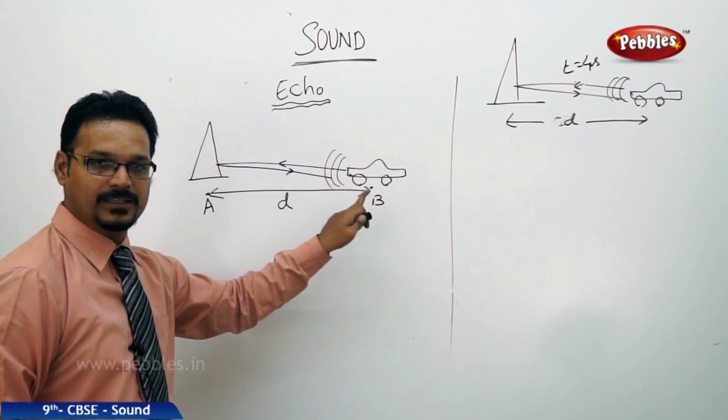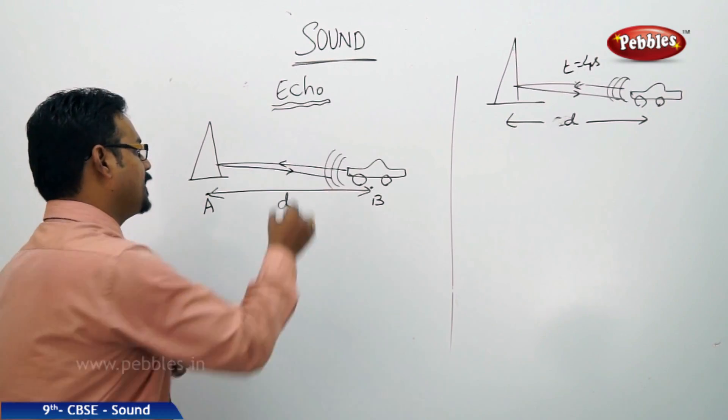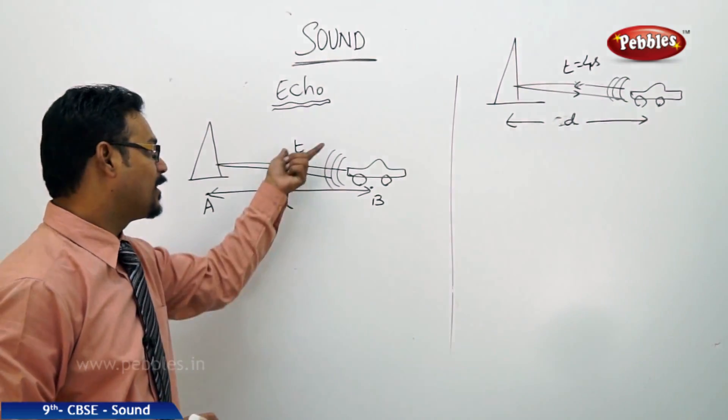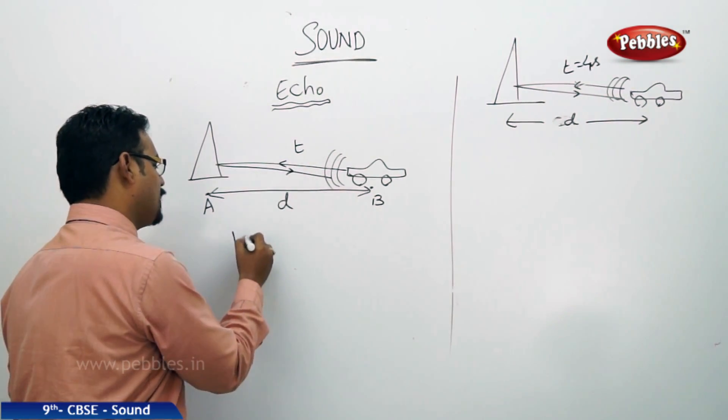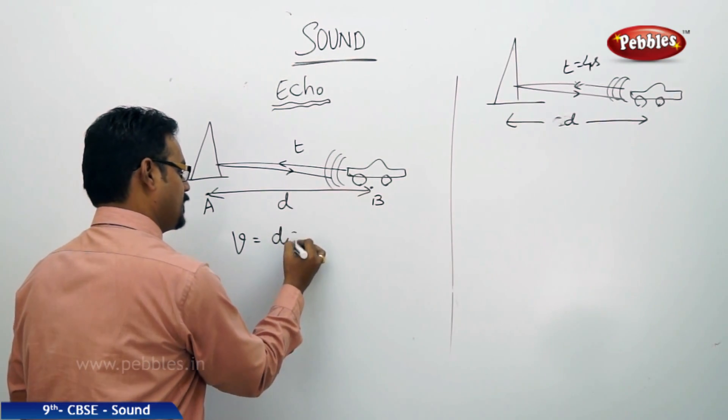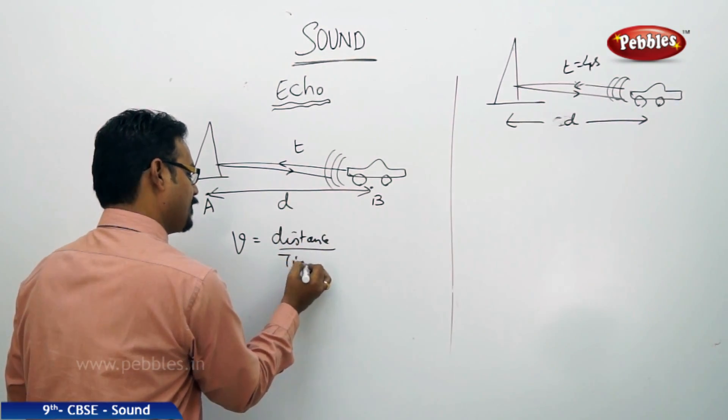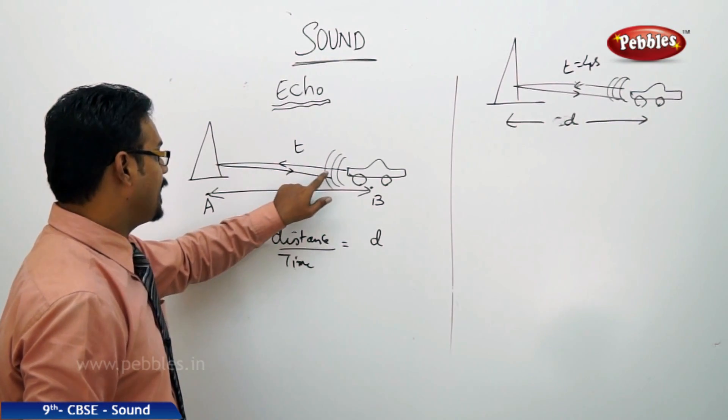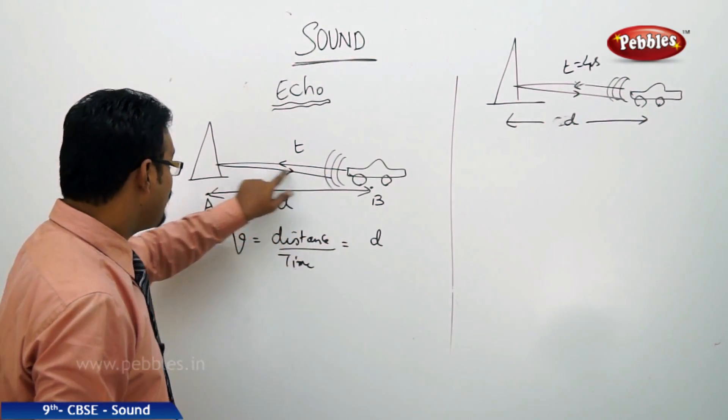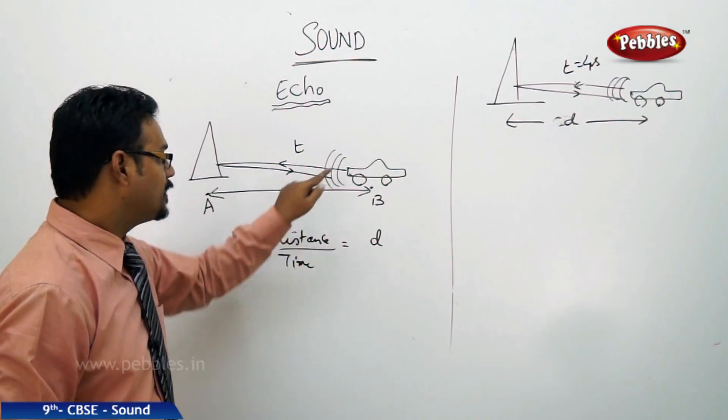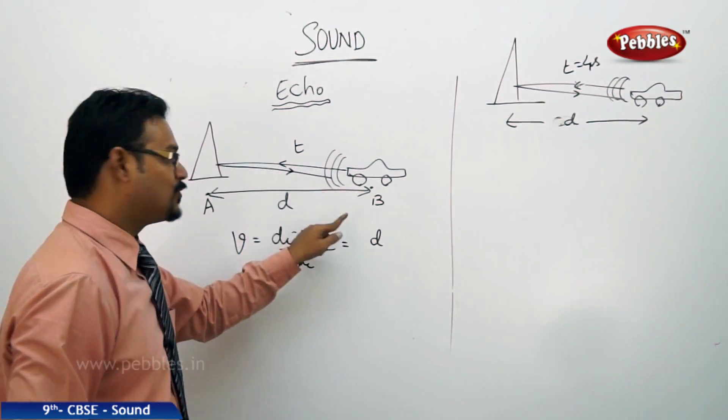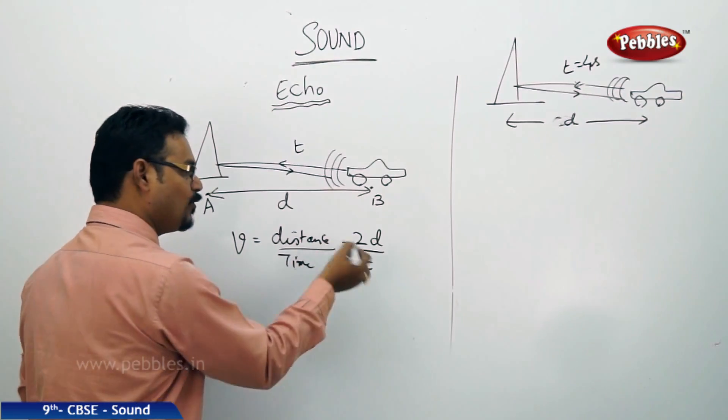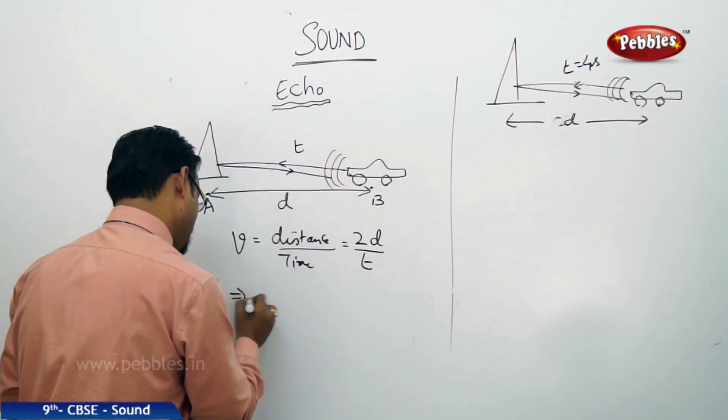Suppose in time t seconds the car driver heard the sound again, which is the echo. According to the formula speed equals distance by time, if I write distance d, I'm not correct because we need to consider the first wave and reflected wave both. So d plus d, which is 2d, by the time taken t. Therefore v equals 2d by t, which implies d equals vt by 2.